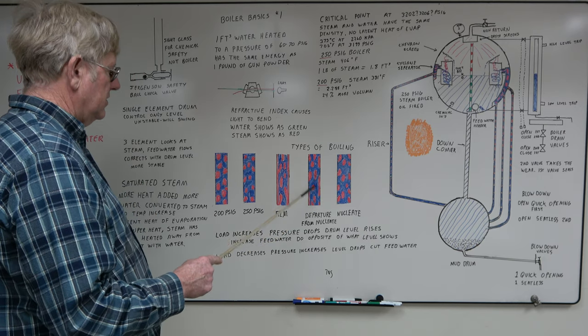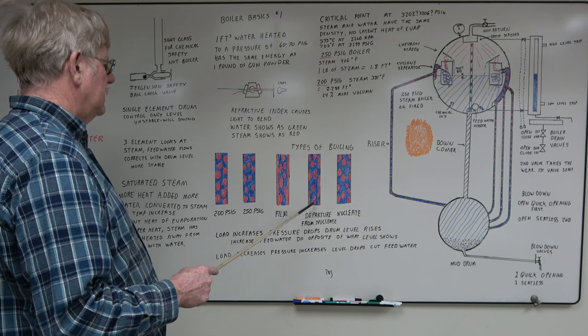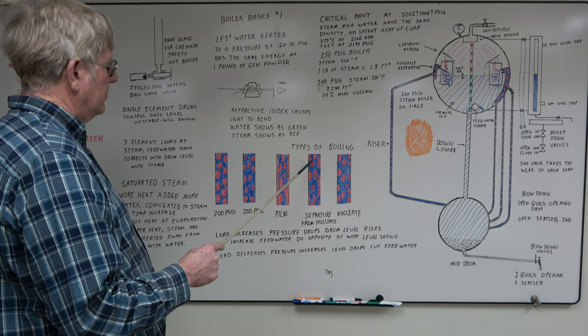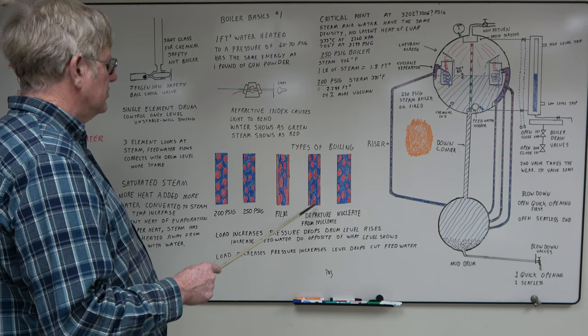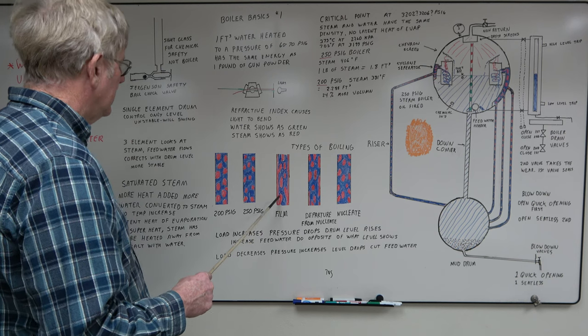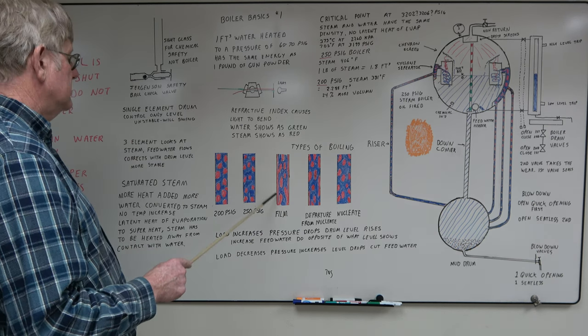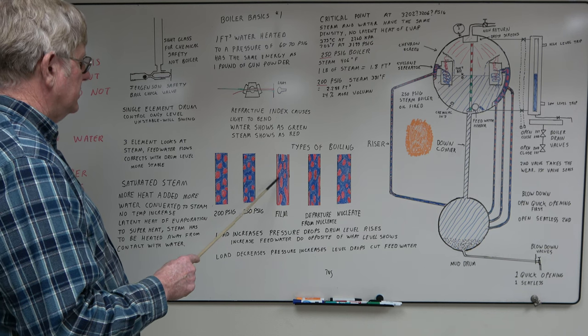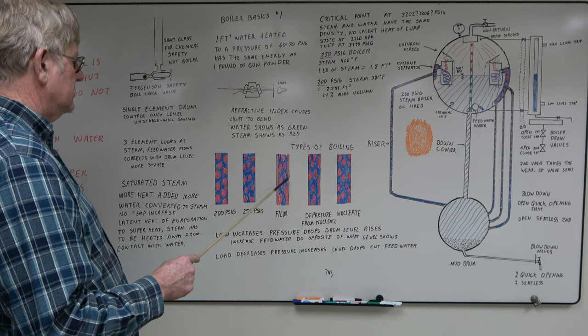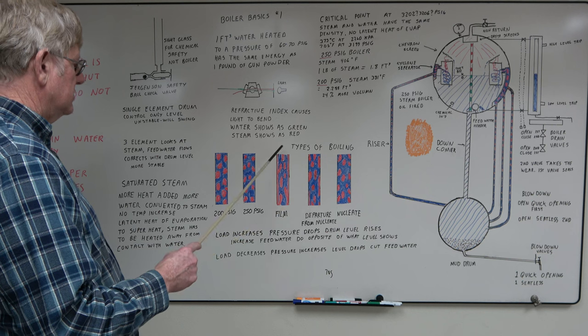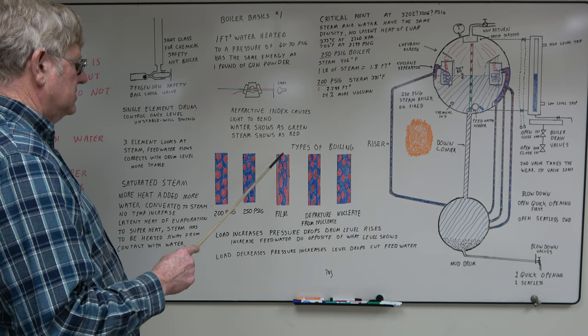Departure from nucleate boiling, starting to get sheets, larger voids. That's from over firing the boiler. You're starting to lose some tube cooling. Then you have film boiling. That's getting sheets of steam forming on the tubes. You're losing a lot of cooling as this is kind of insulation here. High heat loads. Somehow you've lost flow in the tubes or firing is too hard.